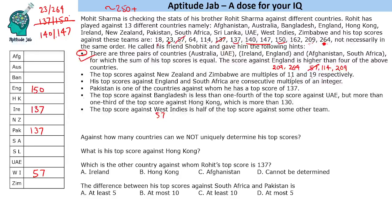The top scores against New Zealand and Zimbabwe are multiples of 11. We know 264 is one of those, but 264 could also be Australia, UAE, or Afghanistan — so 264 cannot go here. Therefore New Zealand gets 209. And since 209 is now used, Zimbabwe gets 140.